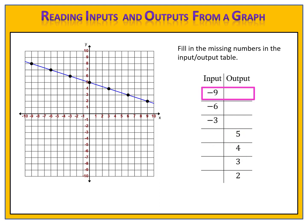Let's start with the first one. The input is negative 9, and we want to find the output. That means there's a point on the graph where negative 9 is the x, and something — the output — is the y value. We go across the x-axis, which is our inputs, and we go over to negative 9. We draw an arrow up to the graph and look at what that y value is. The y value, or the output, is 8. So that point is negative 9, 8, which means when the input is negative 9, the output is positive 8.